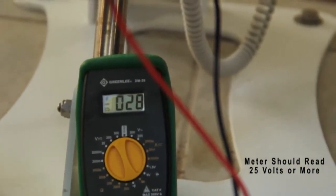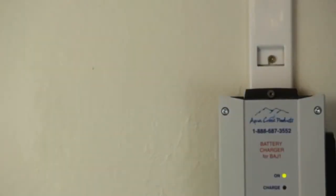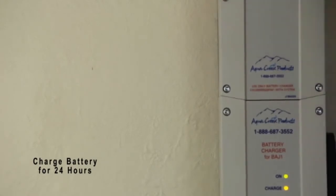If your battery voltage is less than 25 volts, place the battery on the charger and then check it again after 24 hours.